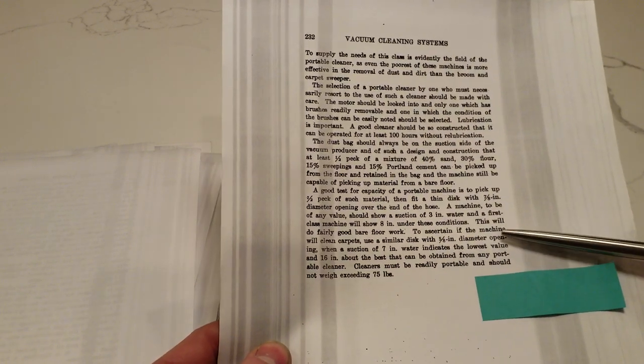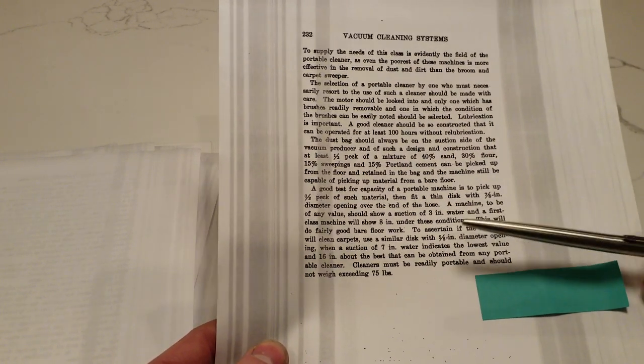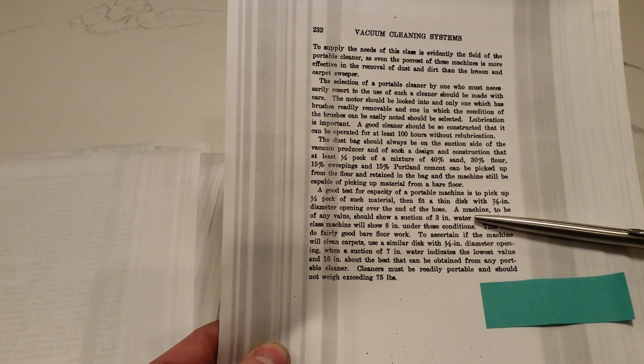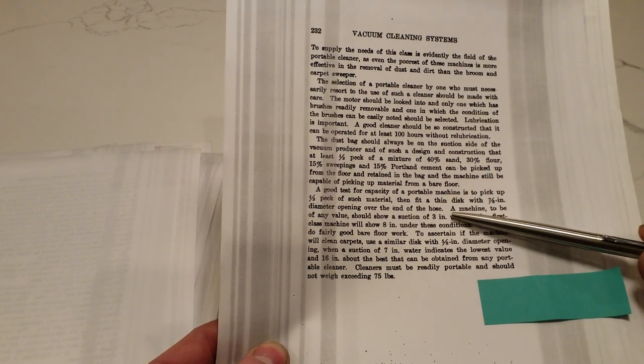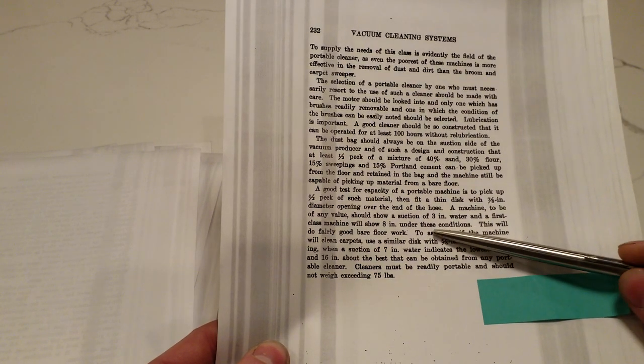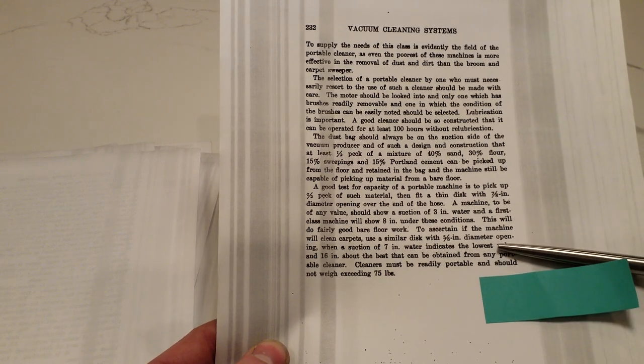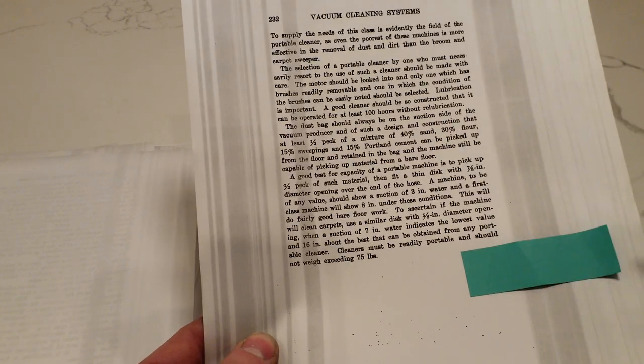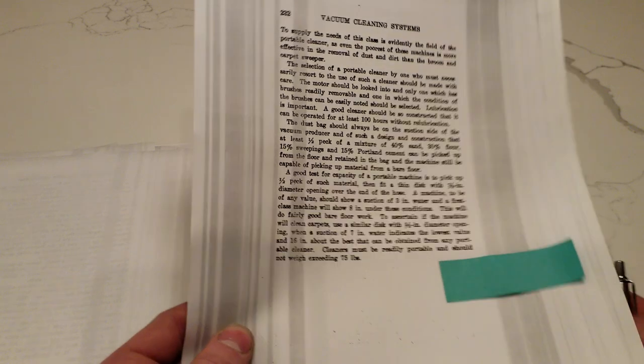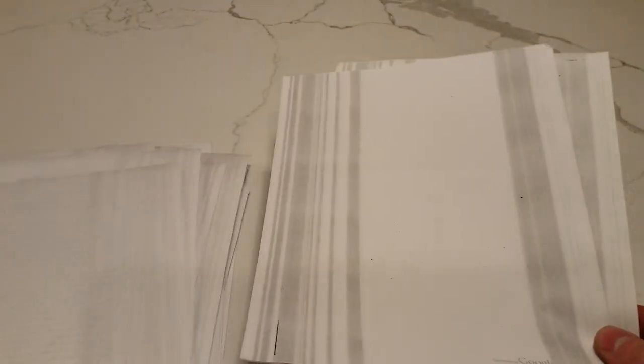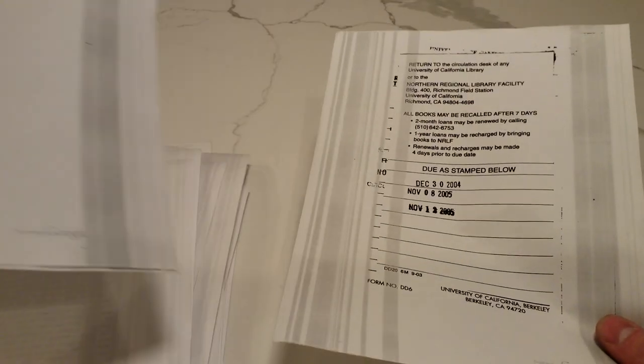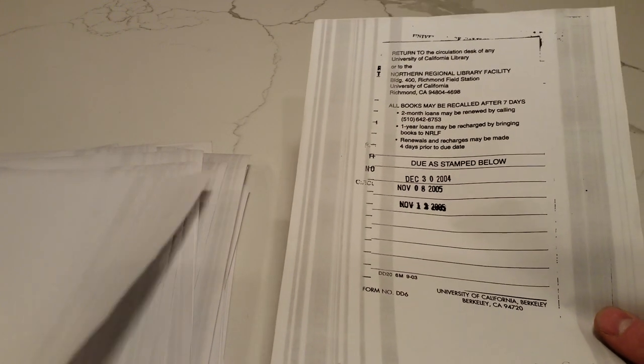Here talking about the portable vacuums is the first time they make use of the water lift measurement because the suction was so much lower. Three inches of water, a first-class machine will show eight inches of water. Cleaners must be readily portable and should not weigh exceeding 75 pounds. Today your home central vacuums are less than 75 pounds. Amazing.